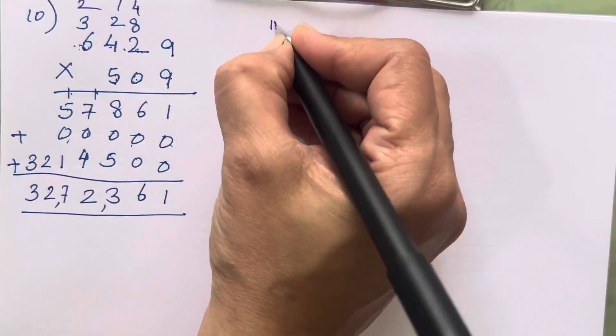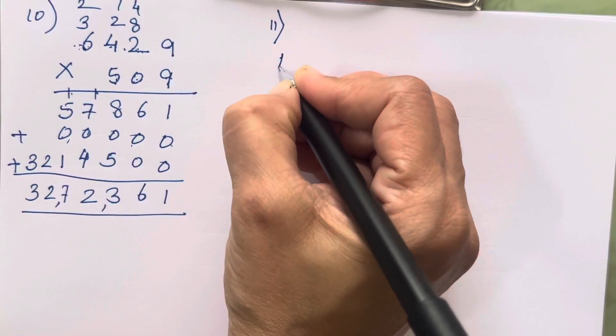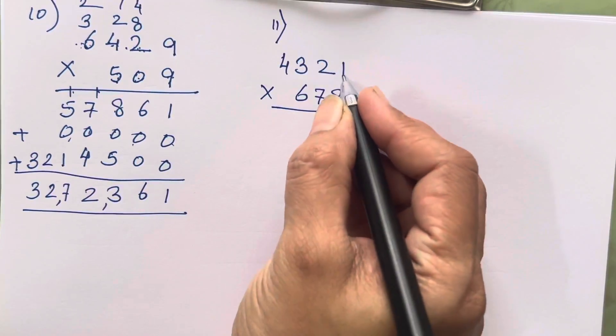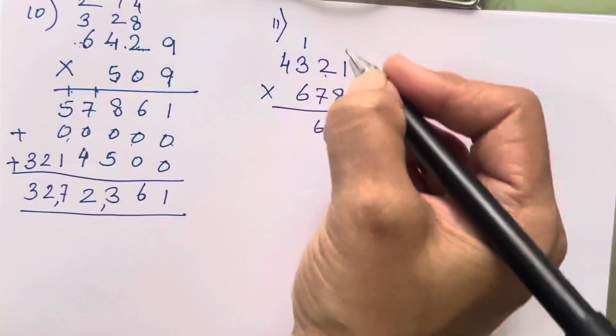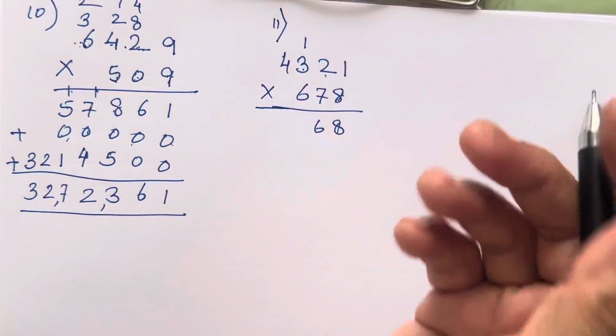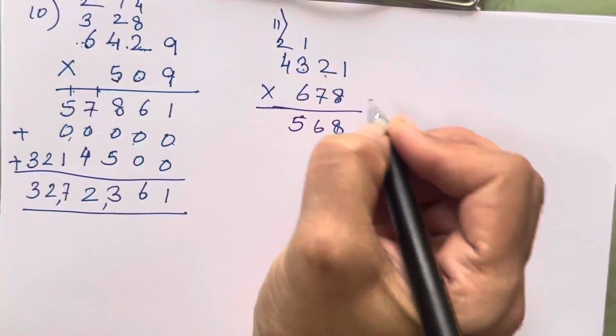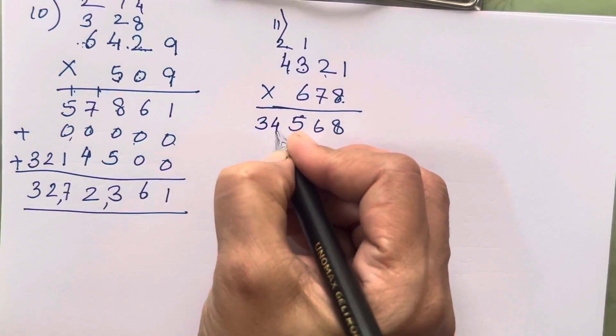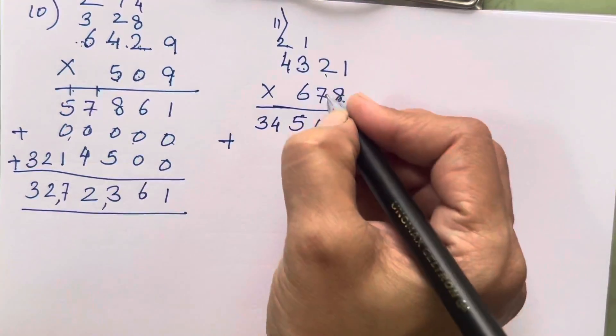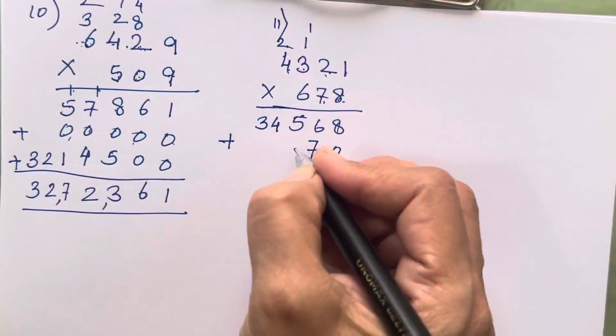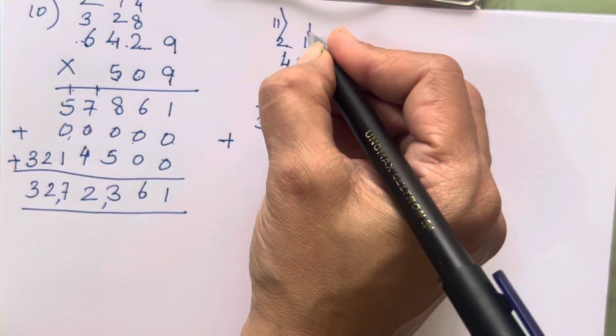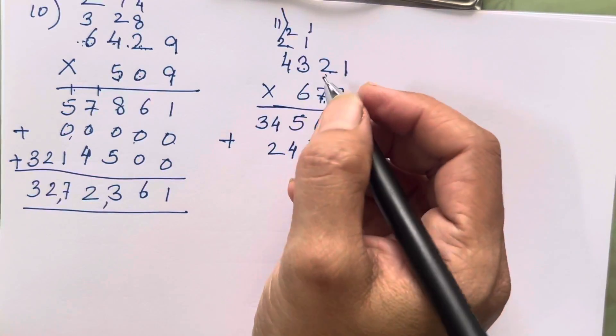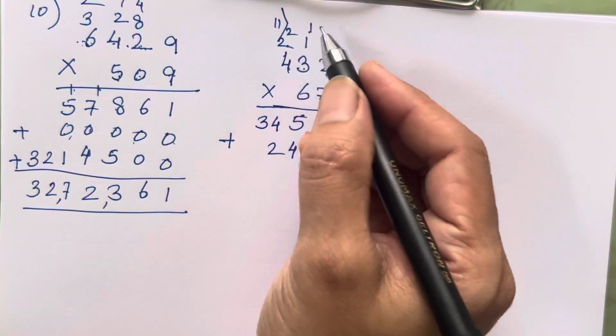Let's move on to the second last sum. That is 4321 into 678. 8 ones are 8, 8 twos are 16. 8 threes are 24, 25. 8 fours are 32 plus 2, 34. 0, 7 ones are 7, 7 twos are 14, 7 threes are 21 plus 1, 22. 7 fours are 28, 29, 30.